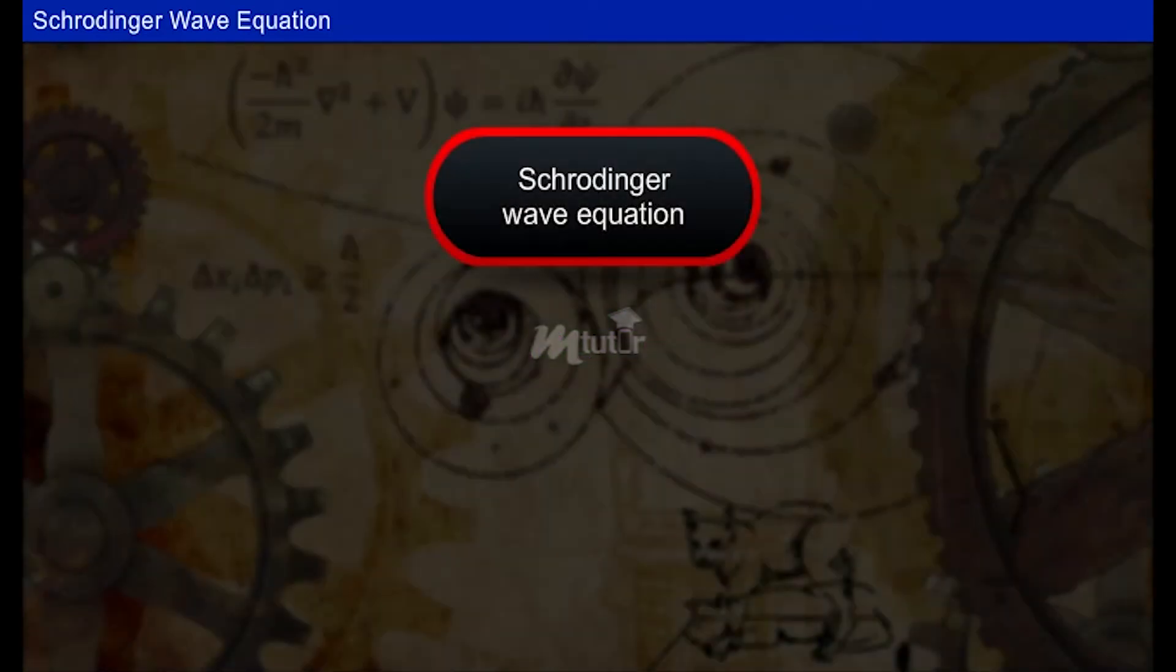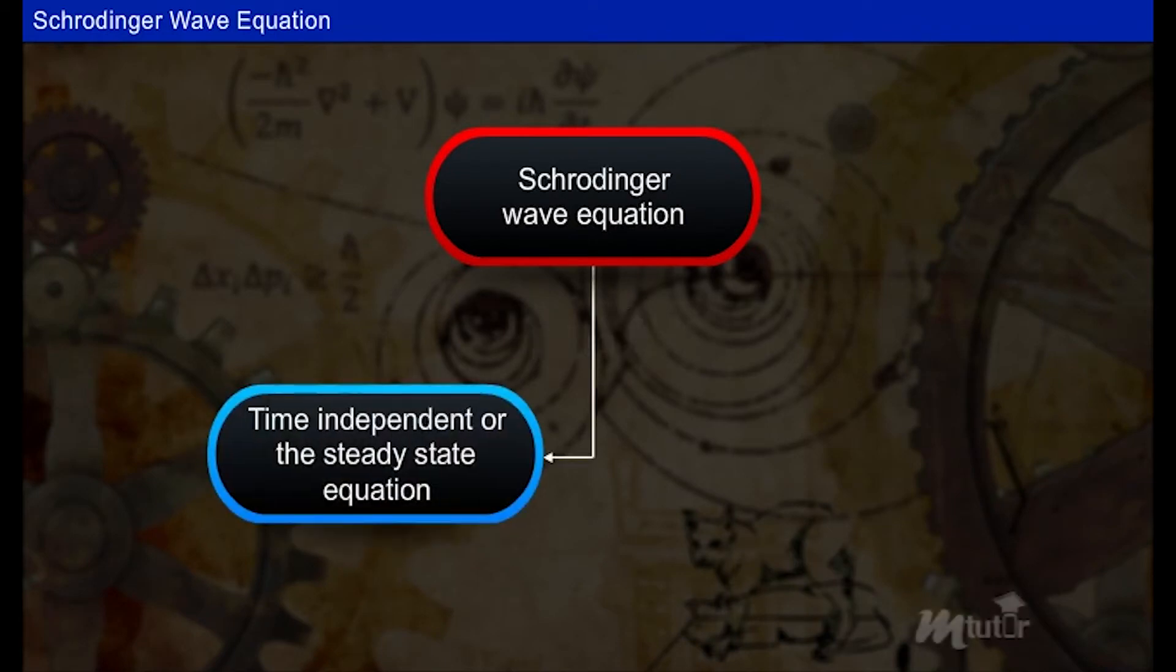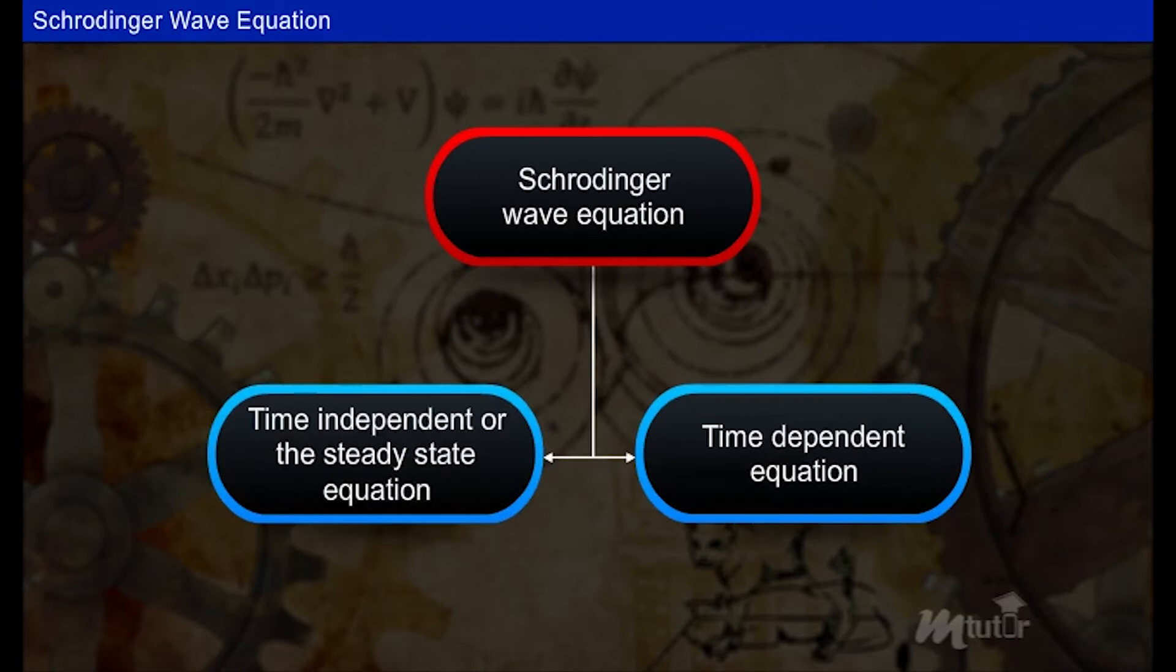Schrödinger wave equation has two forms: one as time-independent equation, and the other one as time-dependent or the steady state equation.